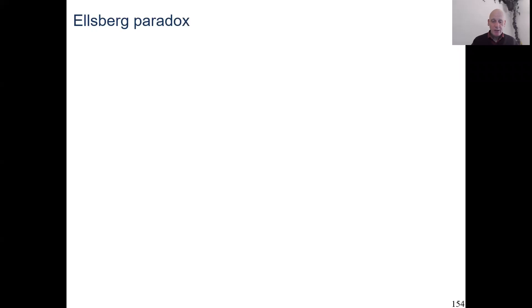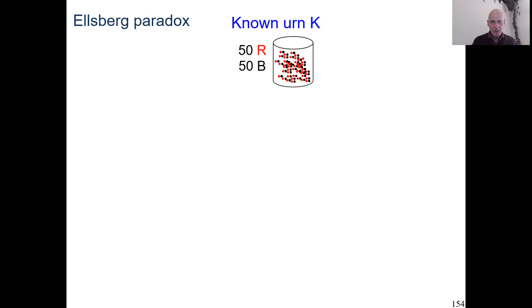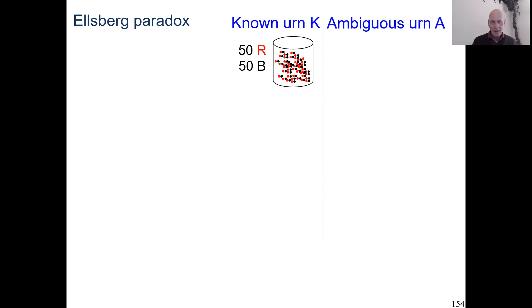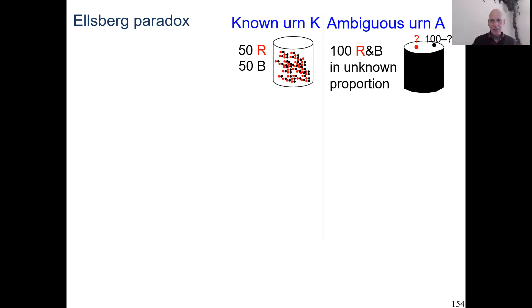So now comes the Ellsberg paradox. We assume we have a known urn K containing 100 balls — 50 are red, 50 are black — so it's a known composition. We have another ambiguous or unknown urn, denoted A. It also contains 100 balls, each ball is red or black, but we don't know the composition.